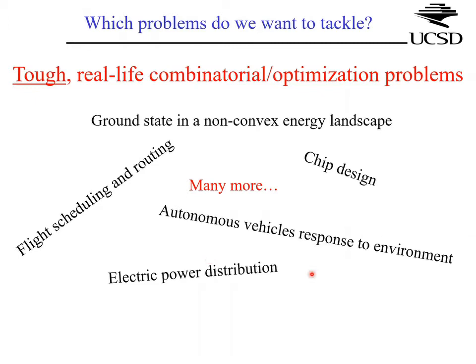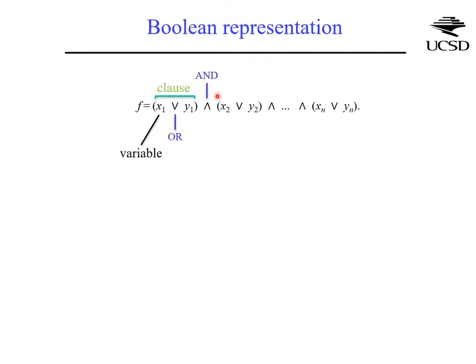These problems can be written in Boolean format as a collection of clauses, which are constraints relating different variables and their negations — called literals. For example, variables x1 and x2 related by logical OR, and clauses related to each other by logical AND.